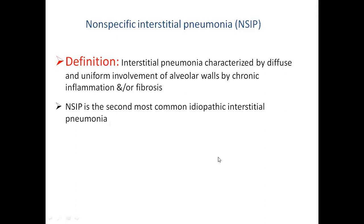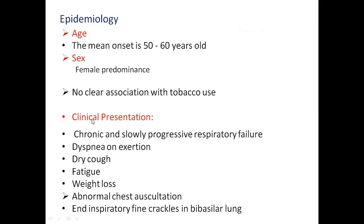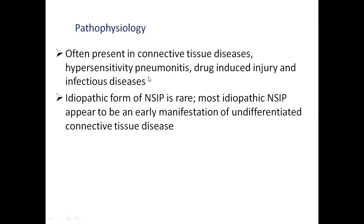NSIP is the second most common idiopathic interstitial pneumonia. Epidemiologically, it commonly appears around age 50 to 60 years with a female predominance. There is no clear association with tobacco or smoking use. However, there is a clear association with connective tissue diseases. Clinically, it presents with non-specific signs and symptoms including dyspnea on exertion, dry cough, fatigue, and weight loss. On auscultation, end-inspiratory fine crackles may be heard in the bi-basilar regions of the lungs.